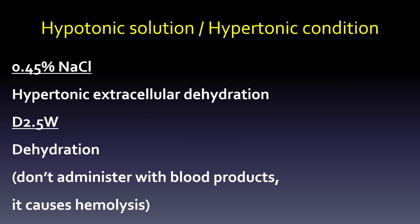The first key point: if we have a hypertonic condition, we use a hypotonic solution. So 0.45% NaCl (half-normal saline) can be used in hypertonic extracellular dehydration. D2.5W similarly is used for dehydration, but do not administer it with blood products — it will cause hemolysis. Remember: a hypotonic solution for a hypertonic condition.